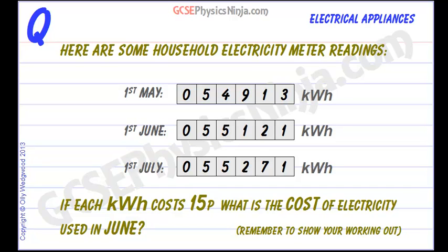Here is another domestic electricity calculation, which is quite a common one on exam papers. Here are some household electricity meter readings. We can see we have a meter reading made in May, in June — the first of June — and the first of July. We have to calculate the cost of electricity used in June if each kilowatt hour costs 15 pence.